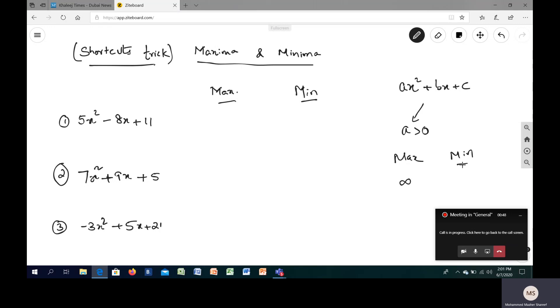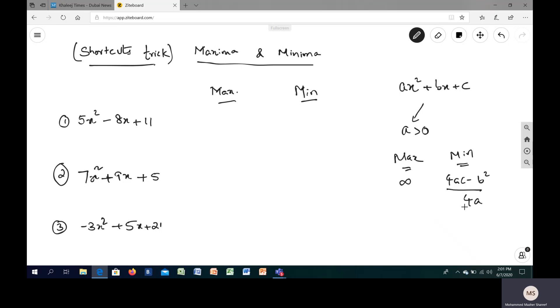What about the minimum value? That's what you have to remember. For the minimum, you just have to work it out with this particular formula: 4ac minus b squared by 4a.